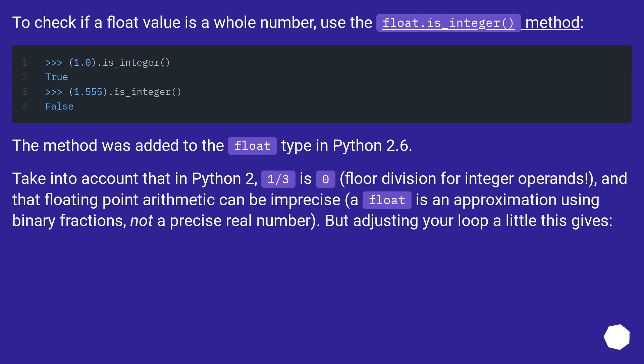Take into account that in Python 2, one third is zero, floor division for integer operands, and that floating point arithmetic can be imprecise. A float is an approximation using binary fractions, not a precise real number. But adjusting your loop a little this gives...